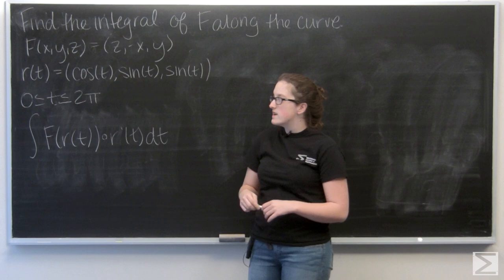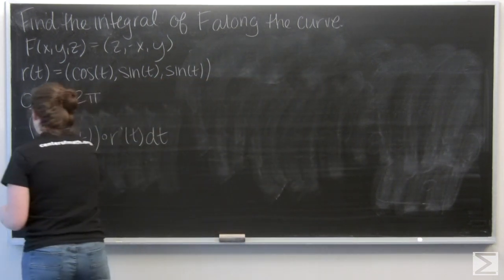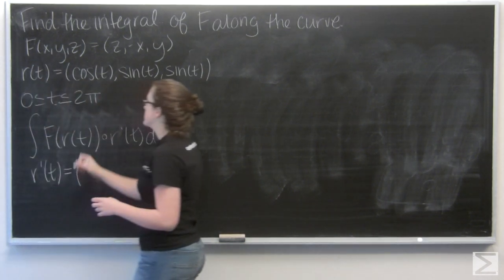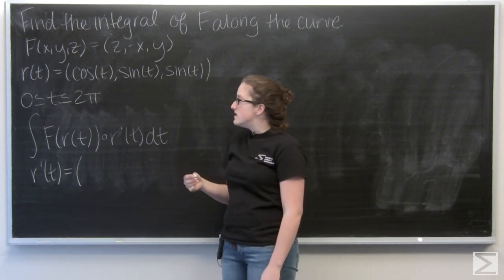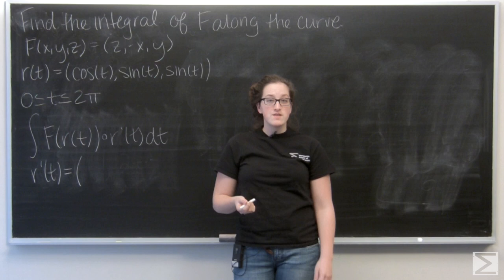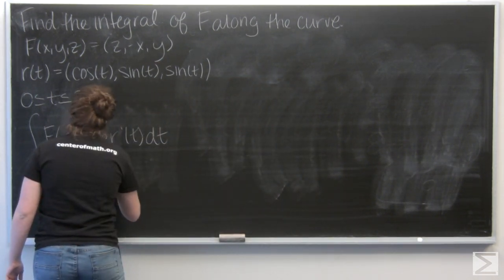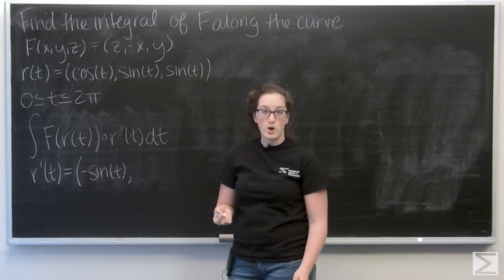So let's go ahead and find r prime. So I'm just going to differentiate each term with respect to t. So let's look at the first one. The derivative of cosine t is going to be negative sine t. And then the derivative of sine t is going to be cosine t.